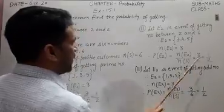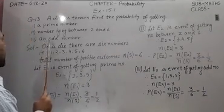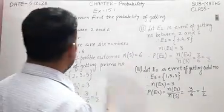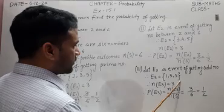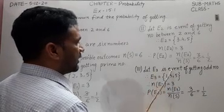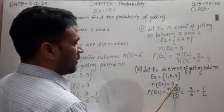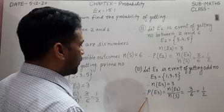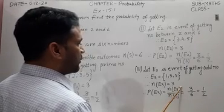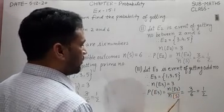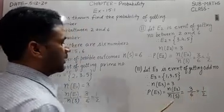The probability of event E2 is number of favorable cases to E2 upon total number of possible outcomes, that is 3 upon 6. Again we get 1 upon 2. In the third case, an odd number — here 1, 3, and 5 are the 3 odd numbers. So elements of event E3, getting an odd number, have 3 favorable outcomes. The probability of getting an odd number is 3 upon 6, and by solving this we get the result 1 upon 2.